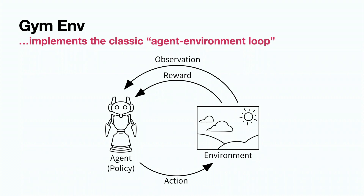The policy gets a new observation and returns the best action if it is optimal, and passes the action to the environment. The environment, having this action, returns another state and a reward. A reward is something designed by you or fitted by a model, which helps the agent understand whether this action was good or bad — does it move us in the desired direction or not?